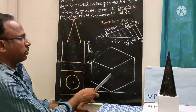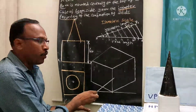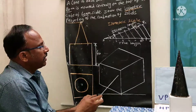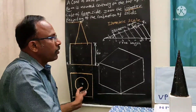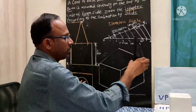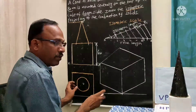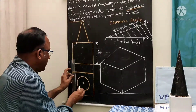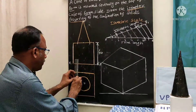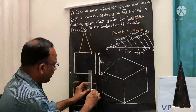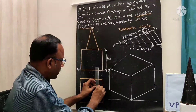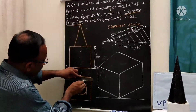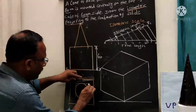This is the way we need to draw the cube. The cube is drawn in isometric. Now I am going to draw the cone above this. For that, I need to draw a square to enclose the circle, as discussed in the previous problem.